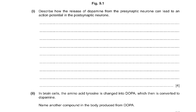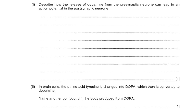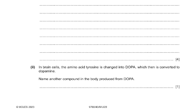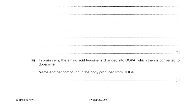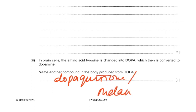In brain cells, the amino acid tyrosine is changed into DOPA and then converted to dopamine. Name another compound in the body produced from DOPA. The answer is dopa quinone — or melanin was also accepted.